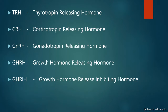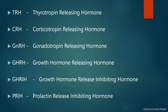The hypothalamus also releases GHRIH — Growth Hormone Release Inhibiting Hormone — which inhibits growth hormone production. The anterior pituitary also releases prolactin, a milk-producing hormone. Prolactin stimulates milk production in lactating females.